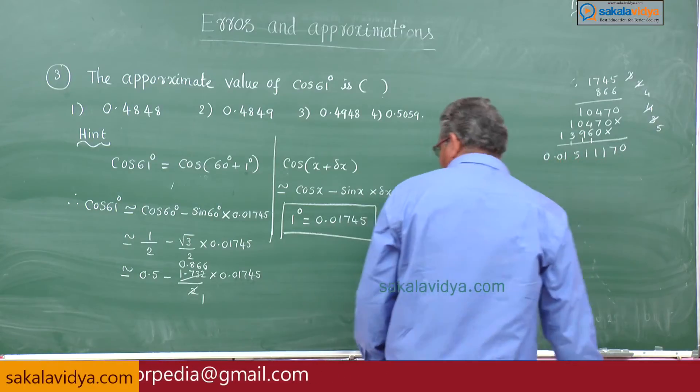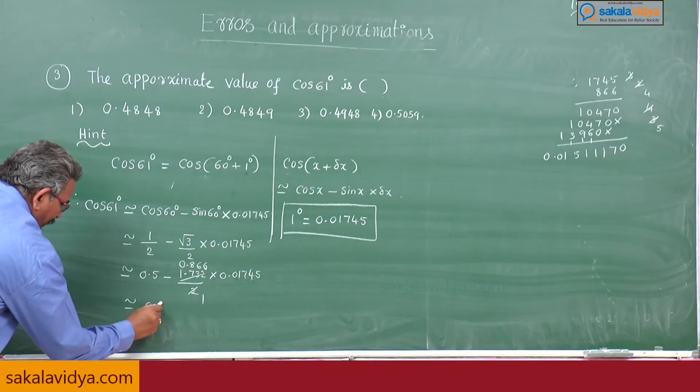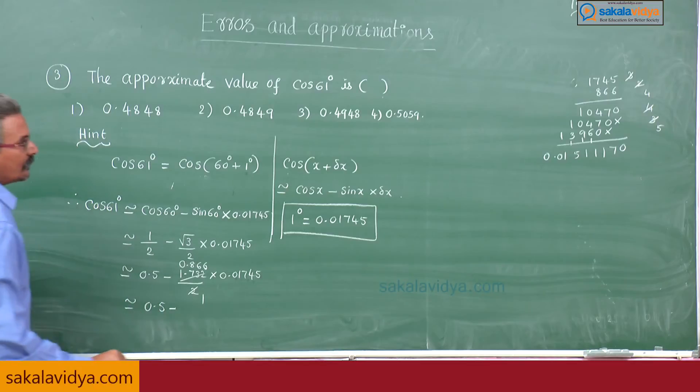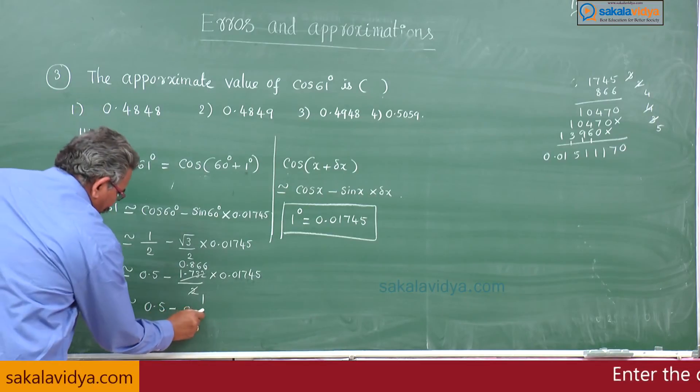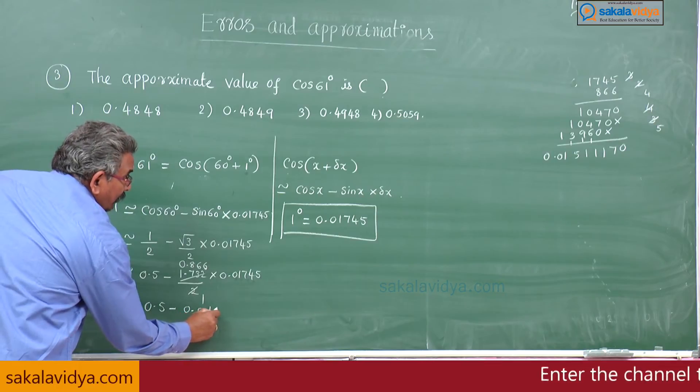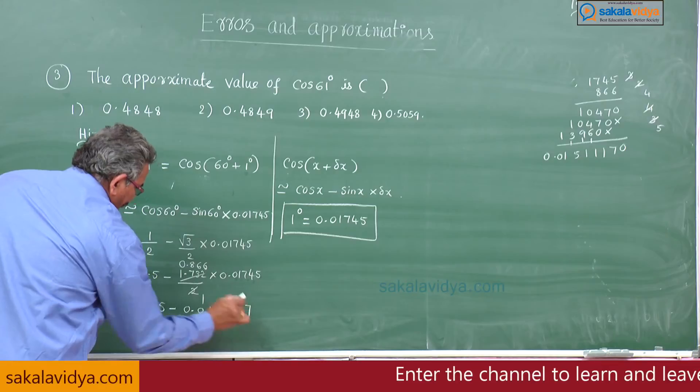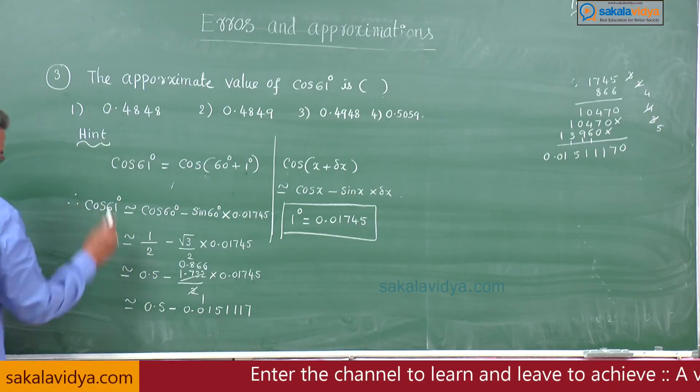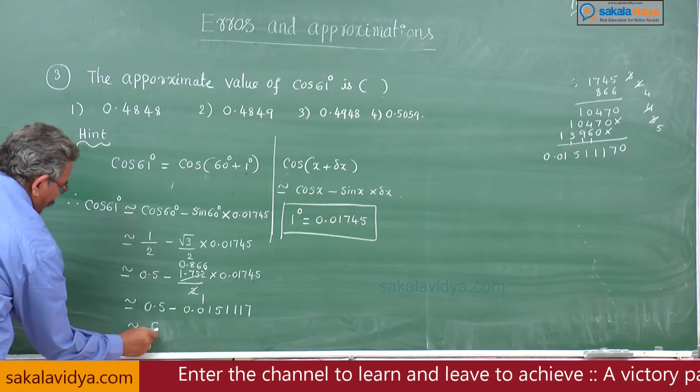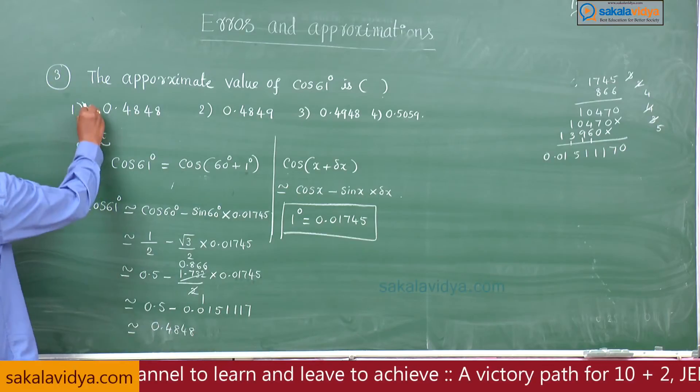You can write now 0.5 minus 0.01511117. If you subtract it, approximately you get 0.4848. This will be the first option.